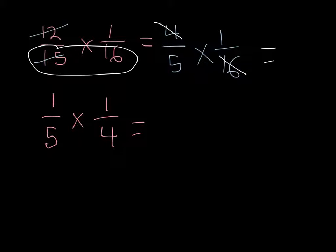Alright, I'm going to multiply across. 1 times 1 is 1. Numerator to numerator. Denominator to denominator. 5 times 4 is 20. I can't simplify that problem any, so I'm done.